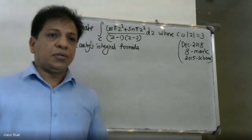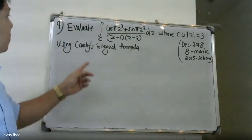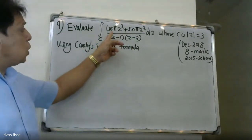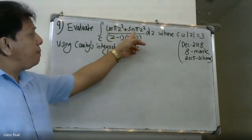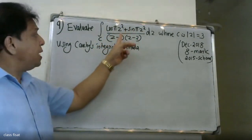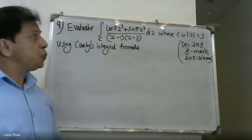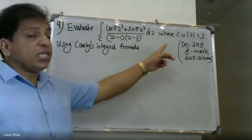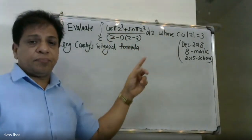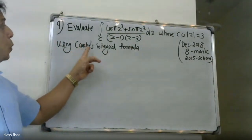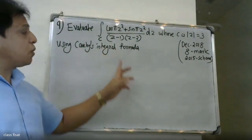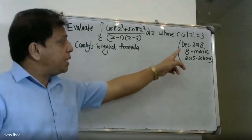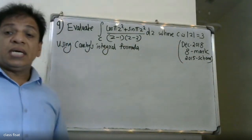Good morning students. The question is to evaluate the integral over C of (cos πz² + sin πz²) / ((z-1)(z-2)) dz, where C is |z| = 3, using Cauchy's integral formula.